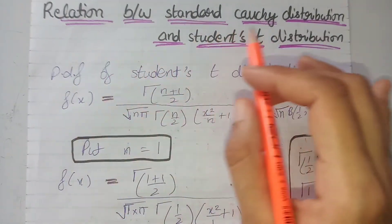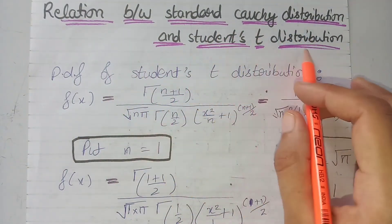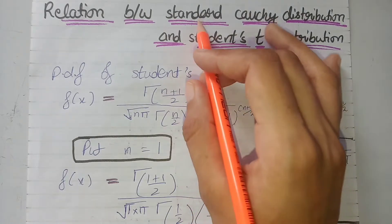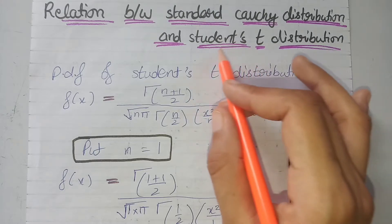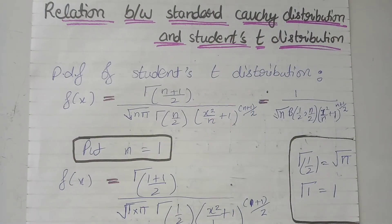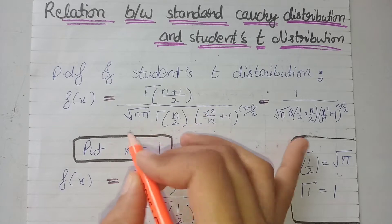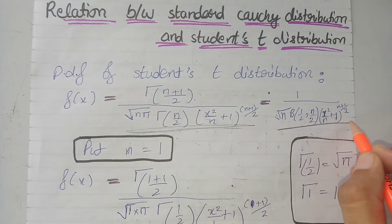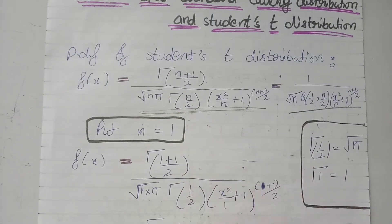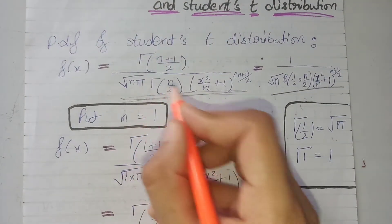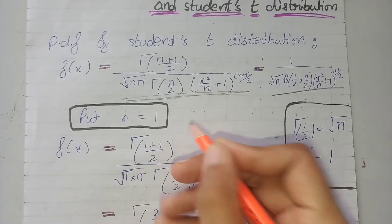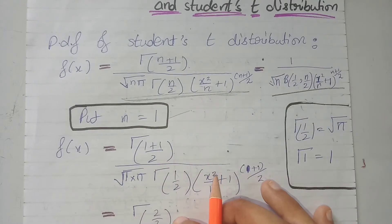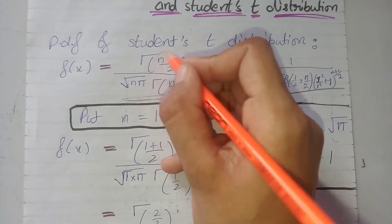Now we will derive the relation between the standard Cauchy distribution and the Student's t-distribution. We are deriving the PDF of the standard Cauchy distribution from the PDF of the Student's t-distribution. We know that the PDF of the Student's t-distribution is expressed in terms of the gamma function and beta function. By writing n=1 in place of n, we will get the PDF of the standard Cauchy distribution.